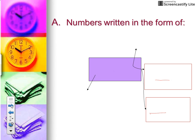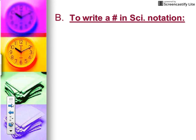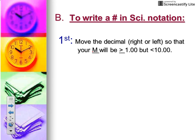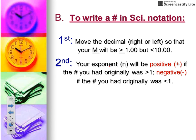Let's write down the steps for how to write a number in scientific notation. Step one: move your decimal either right or left so that your coefficient m will be greater than or equal to 1 but less than 10. Step two: the value of your exponent will be positive if the number you originally had was greater than one — those are the big numbers. Your exponent will be negative if the number you originally had was less than one — those are the tiny numbers.